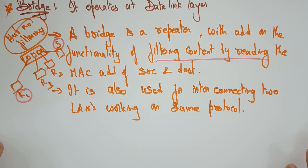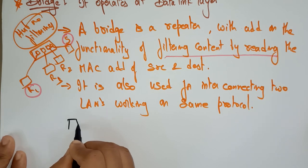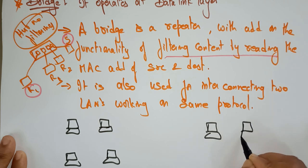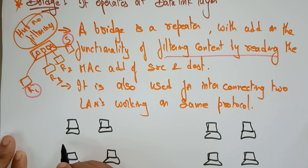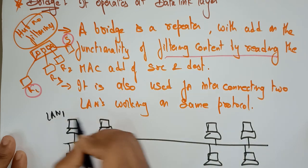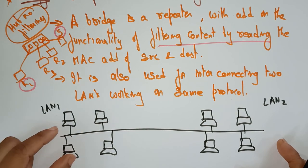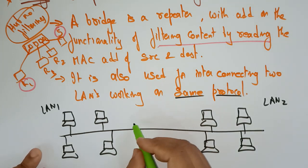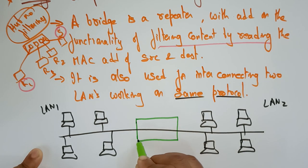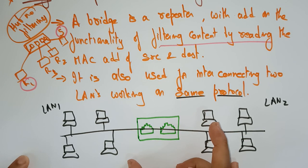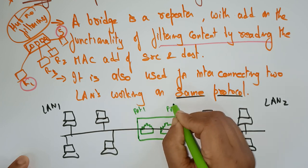A hub connects all computers in one local area network, but a bridge can interconnect two LANs working on the same protocol. Let's take two local area networks: LAN 1 and LAN 2, both working on the same protocol. In between these two, I am going to connect one bridge. Remember, the bridge is not a multi-port device — it is only a two-port device. So there are two ports: Port 1 and Port 2.